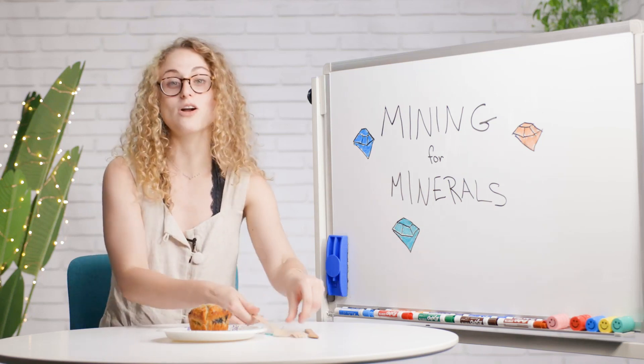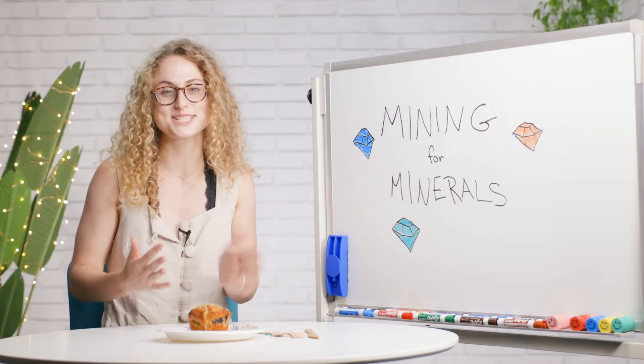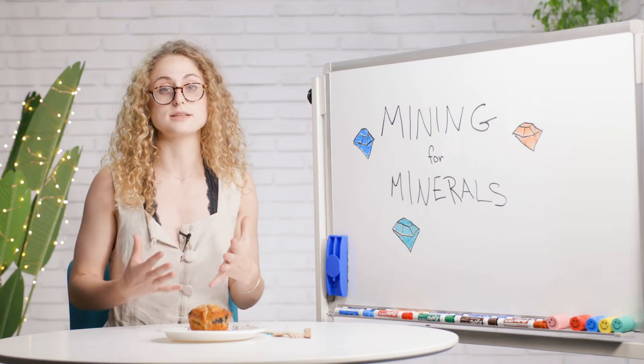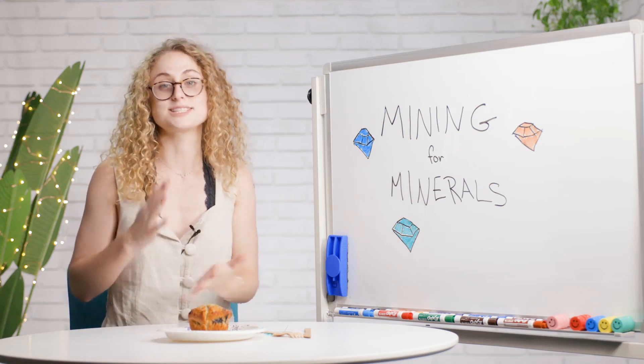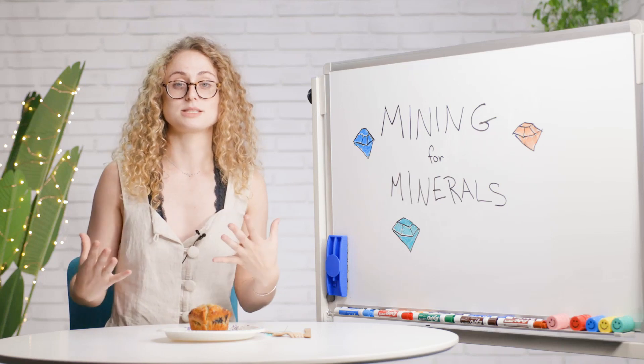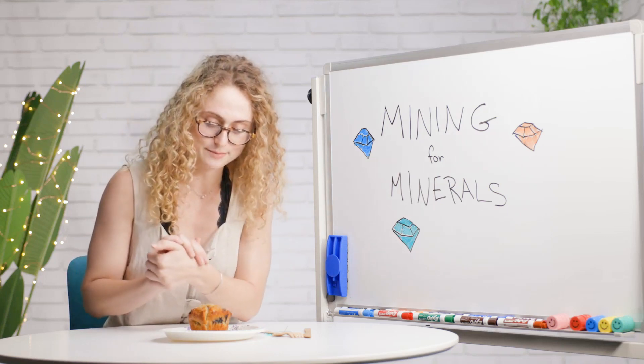The muffin represents a land area and the blueberries are valuable deposits. Your goal is to remove as many mineral deposits or blueberries with the least amount of damage to the land possible. So let's get started on my muffin.